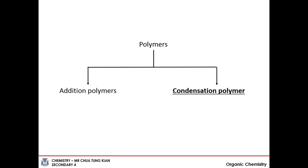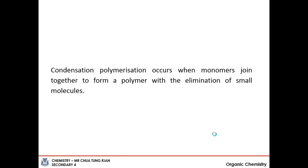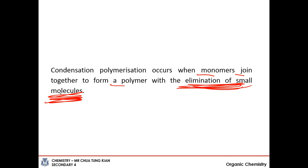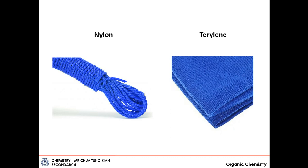The next class of polymers is called condensation polymers. There are two condensation polymers you will need to know: one is nylon, and one is terylene. Condensation polymers are formed when monomers join together to form a polymer with the elimination of a small molecule. That small molecule could be water, or other small molecules such as HCl can also be lost.